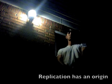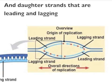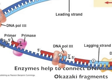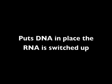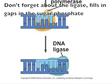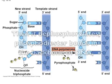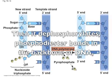Replication has an origin, with leading and lagging strands — enzymes help connect DNA and Okazaki fragments. On the lagging strand, RNA primers are placed and DNA polymerase follows the primers, putting DNA in place.